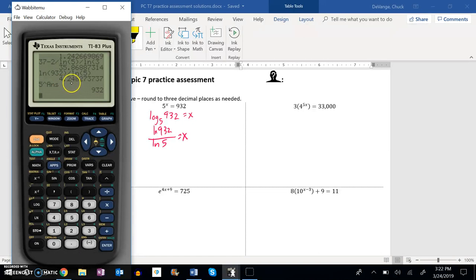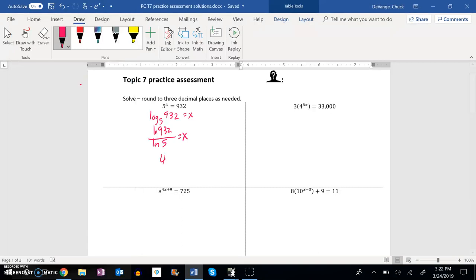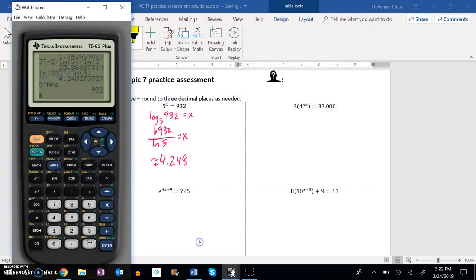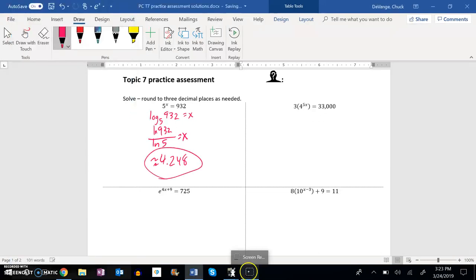So 4.2483... oh, it just says three decimal places, so I can go to there. Let me double check, make sure I wrote it down right. 4.248. Yeah, great. So there's my answer for that first one.